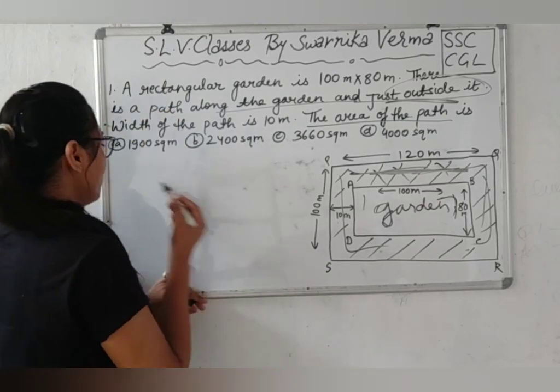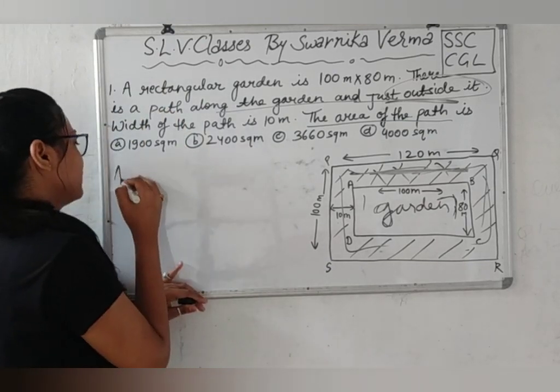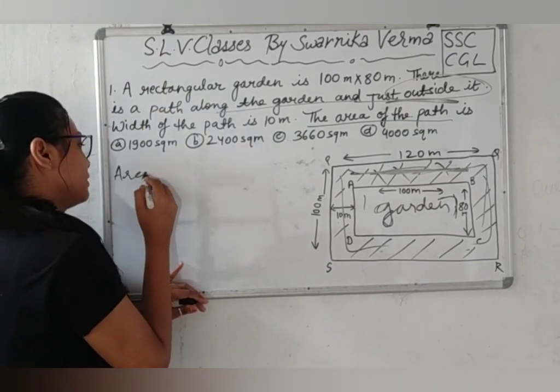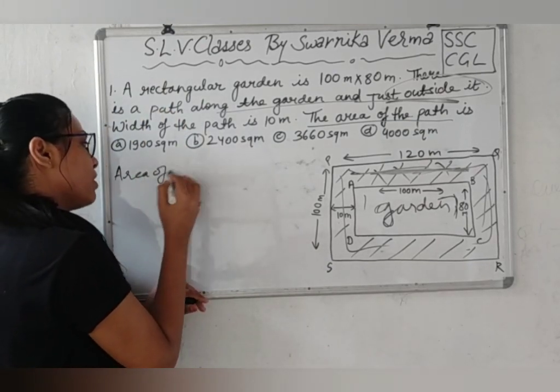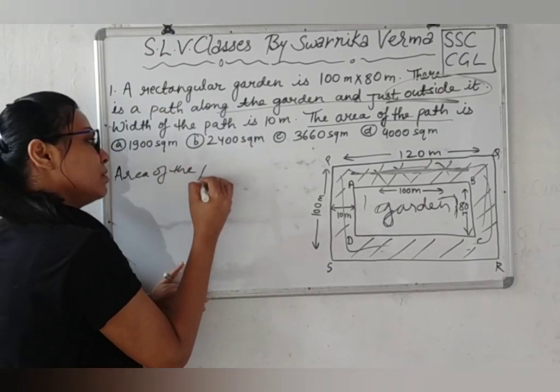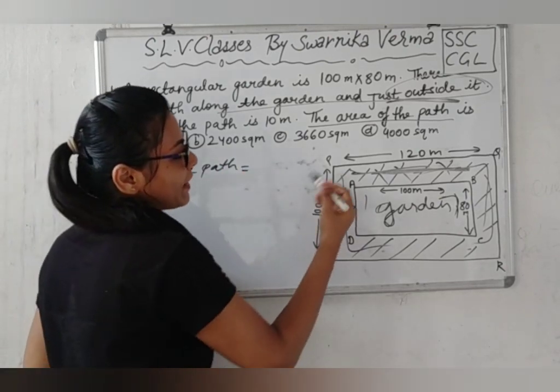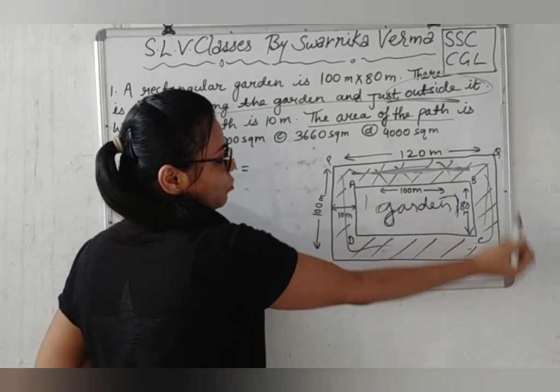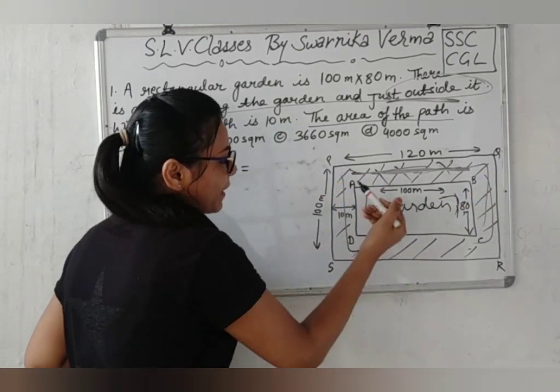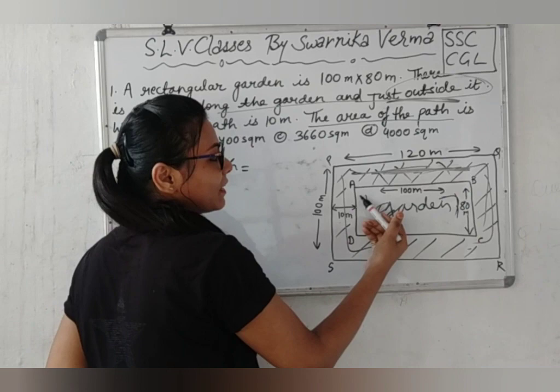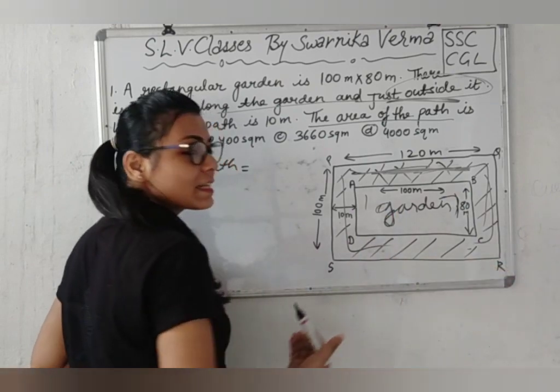So, right here, area of the path is equal to area of rectangle PQRS minus area of rectangle ABCD.